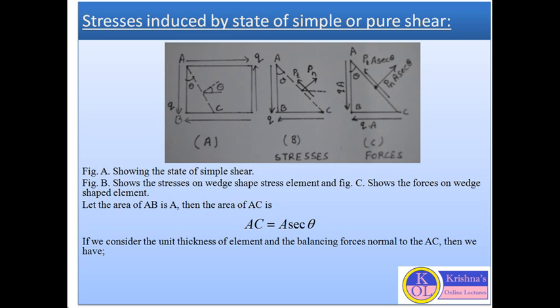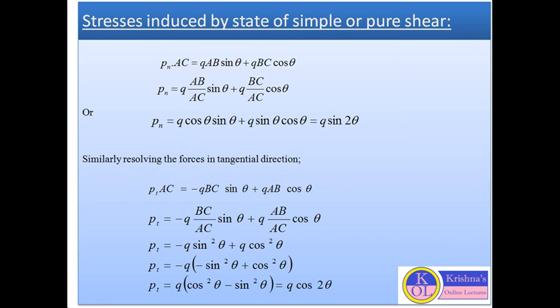Resolving all forces in the normal direction, we have: Pn·AC = Q·AB·sin θ + Q·BC·cos θ. Simplifying, Pn = (AB/AC)·sin θ + (BC/AC)·cos θ, which equals Q·cos θ·sin θ + Q·sin θ·cos θ. Since AB/AC = cos θ and BC/AC = sin θ, this simplifies to Q·sin 2θ. So the equation for normal stress is Pn = Q·sin 2θ.